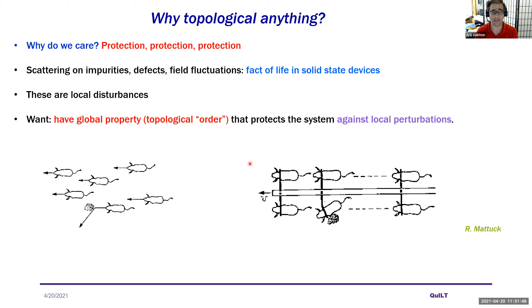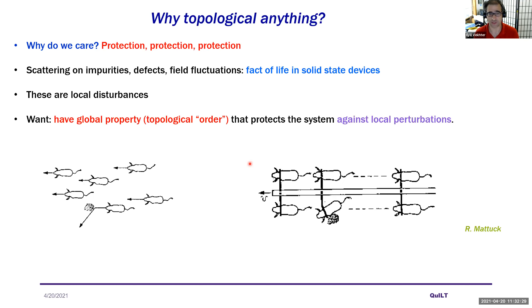Looking at the title, I felt I need to start by discussing why topological anything and why should we care. In solid state physics we always deal with defects — in any electronic transport I scatter on impurities, on local fluctuations, and there is no way to get away from that. So the task, if you want something that is protected, is to design a system that offers protection from local disturbances, and the best way we know is to have some global property — topological order — that protects against local perturbations.